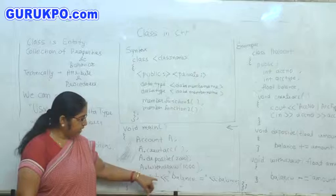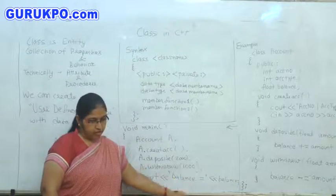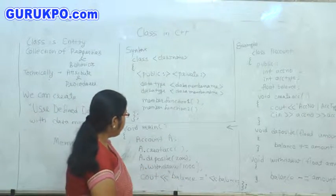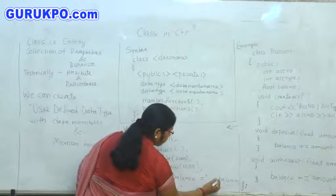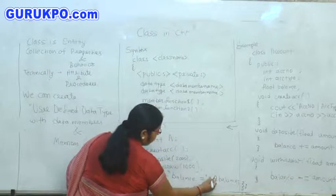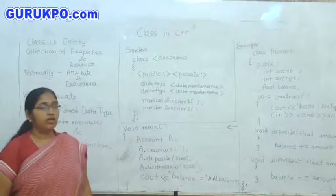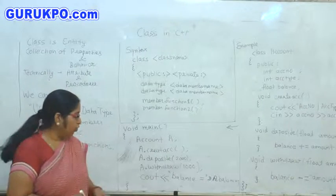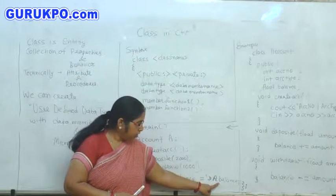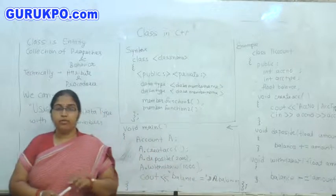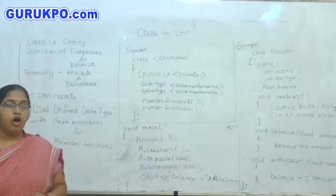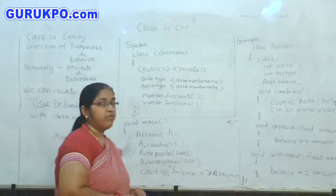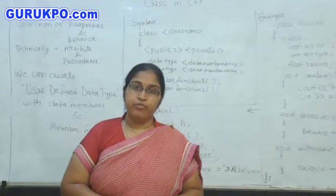At finish, we can access this balance also. Now, this balance is the member of A object. So, we should use A dot balance because balance is also a member of A object.